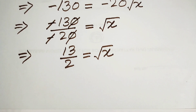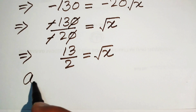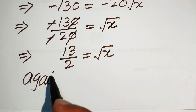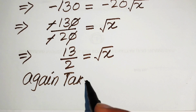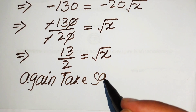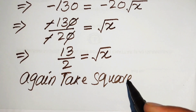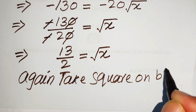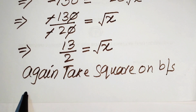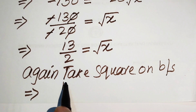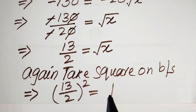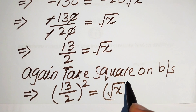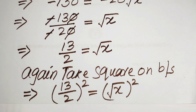Since our target is to find the value of x, we need to eliminate this radical sign. We take the square on both sides again: (13 over 2) squared equals (square root of x) whole squared.